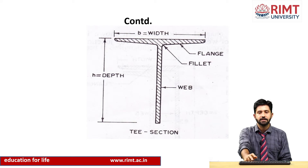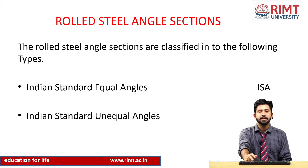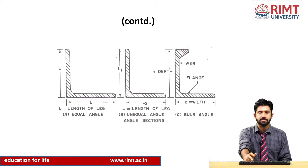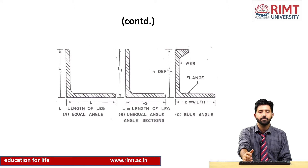In a T section, the vertical portion is known as the web and the horizontal portion is the flange. Rolled steel angle sections have a shape like the letter L. We have two types: Indian Standard equal angles — when both sides are the same — and Indian Standard unequal angles — when the dimensions of both sides differ. When one side of an L section is bent, it is known as a bulb angle.